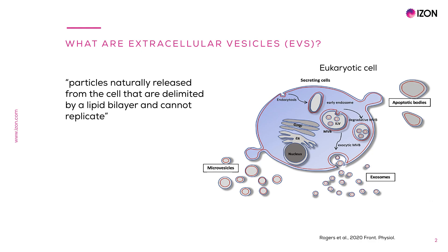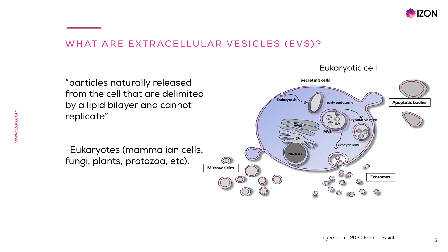Extracellular vesicles, or EVs, are particles naturally released from the cell that are delimited by a lipid bilayer and cannot replicate. EVs are complex signaling vehicles that can target recipient cells thanks to the EV surface molecules. Once recognized or internalized, EVs are able to modify the physiological state of the recipient cell. We know now that all living cells have the capacity to release EVs — that means eukaryotes, including mammalian cells, fungi, plants and protozoa, and prokaryotes like bacteria.